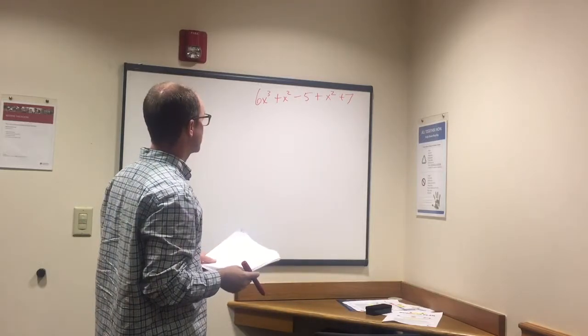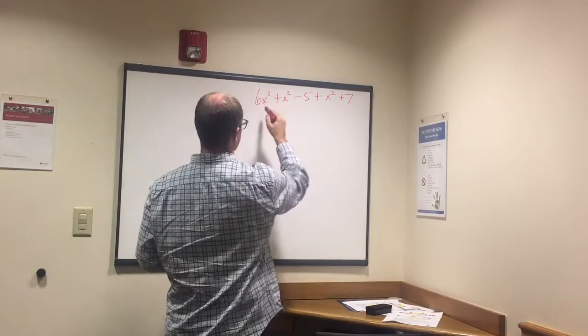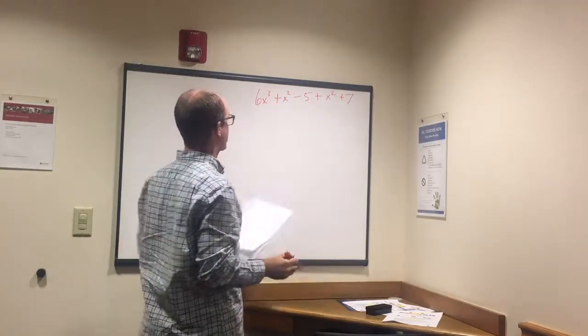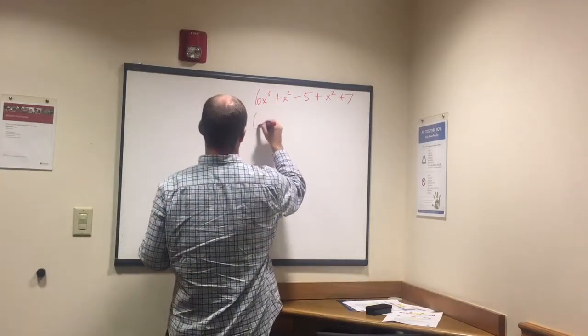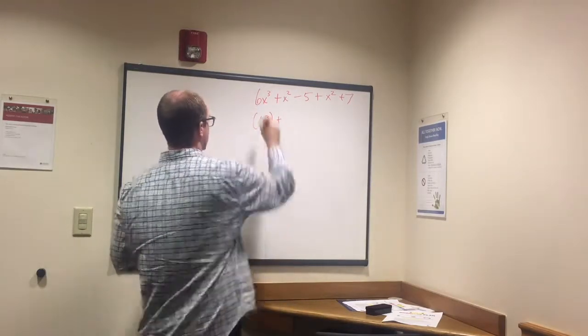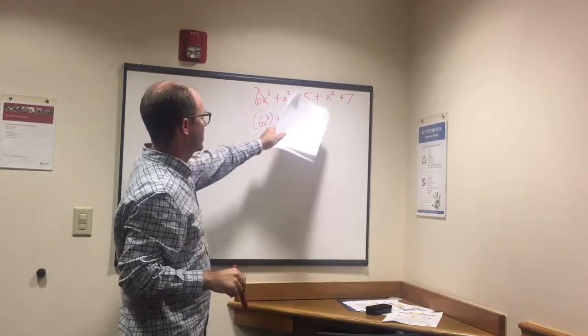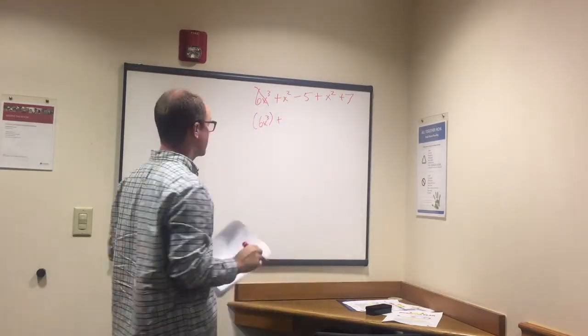What we need to do is combine like terms, we're trying to simplify this. Do we have any exponents that have 3 except for 6x to the third? No, so 6x to the third by itself. We have x squared and we have x squared again so we have 2x squared. We add those together.